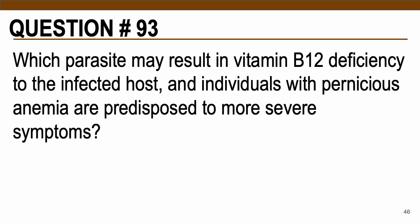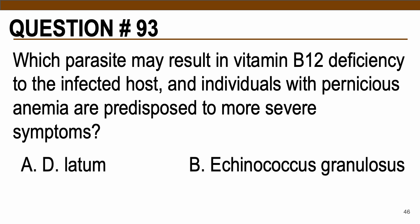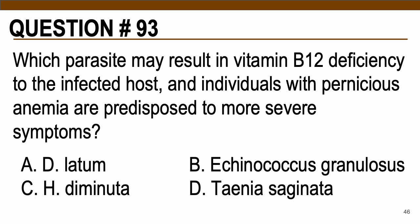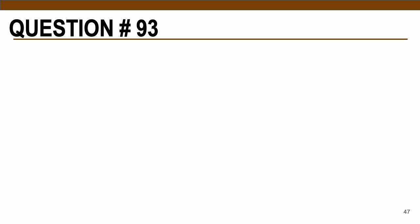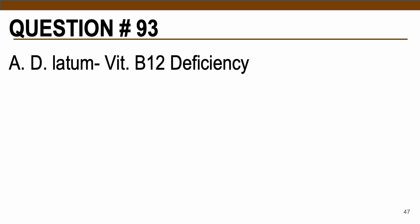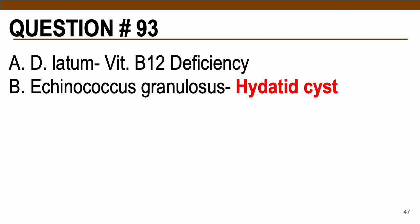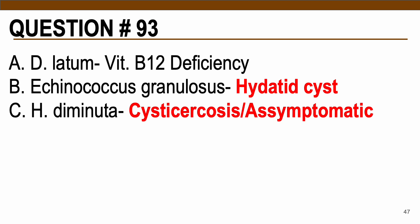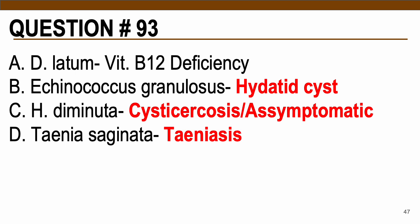Question number 93: Which parasite may result in vitamin B12 deficiency and individuals with pernicious anemia are predisposed to more severe symptoms? Choices: A — Diphyllobothrium latum, B — Echinococcus granulosus, C — Hymenolepis diminuta, D — Taenia saginata. The correct answer is letter A, Diphyllobothrium latum, associated with vitamin B12 deficiency. Echinococcus granulosus causes hydatid cyst disease. Hymenolepis diminuta is more common as cysticercosis with infected persons usually asymptomatic. Taenia saginata causes taeniasis — presence of adult worms in the infected person.